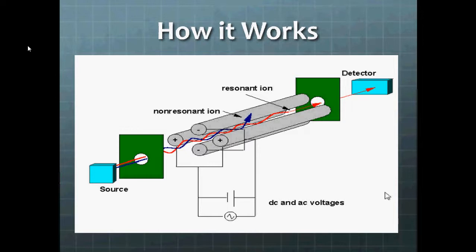For every voltage that is scanned through, there's a specific and small range of mass to charge ratio that will be able to make it through the quadrupole at that particular voltage. These are called your resonant ions. Now the rest of the ions will veer off and collide with the rods and lose their charge, become neutral, and then they will eventually be sucked out by the vacuum pump.